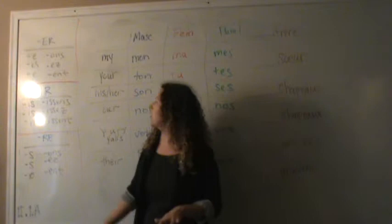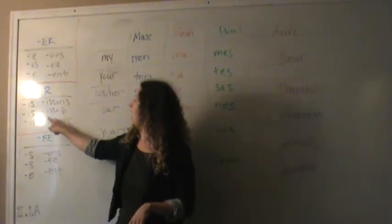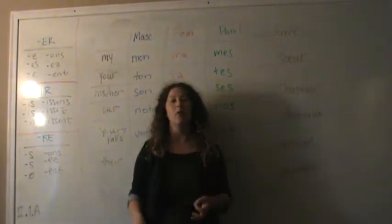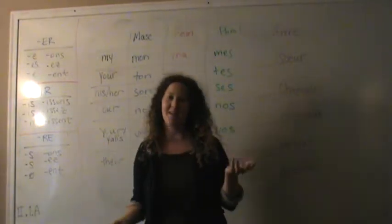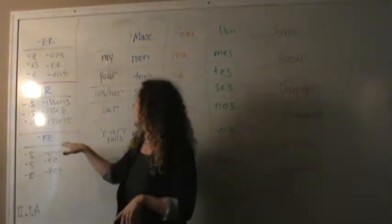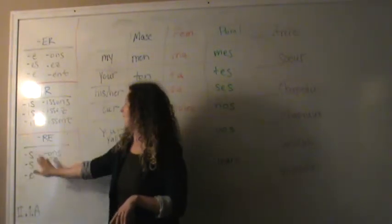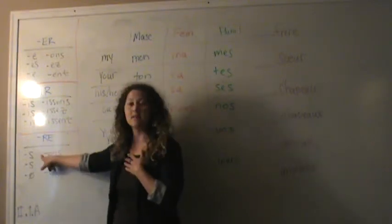This one also has a song: I-S-I-S-I-T, I-S-S-O-N-S, I-S-S-E-Z, I-S-S-E-N-T. Now for your RE verb, there is no song that I have learned yet, so if you think of one, please email me and let me know. But again, it's the same process. Take off the RE and then add the ending according to your subject pronoun. For JE, S. For TU, S.